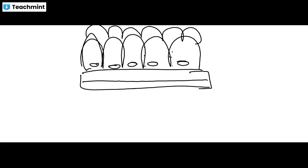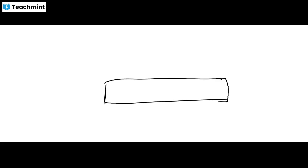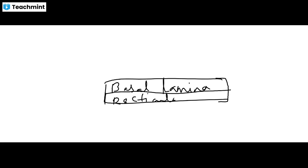Epithelial tissue consists of an apical free surface and a basal surface. Below the cells is the basement membrane, which is composed of the basal lamina and reticular lamina. Beneath the basement membrane is the connective tissue.